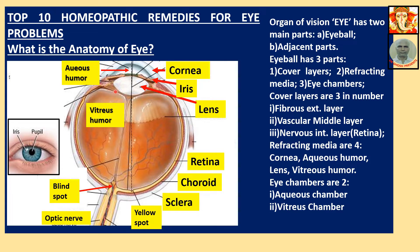After the cornea comes the aqueous humor. The lens has divided the whole eyeball into two chambers: anterior chamber and posterior chamber. The fluid in the anterior chamber is called aqueous humor. Behind the lens lies the vitreous humor in the posterior chamber.